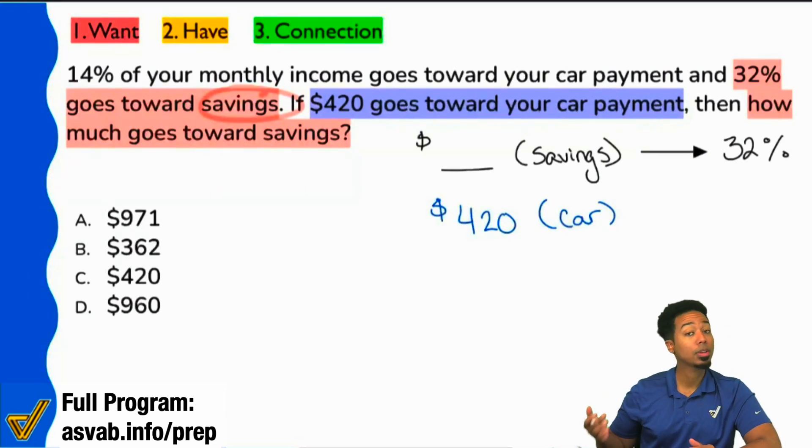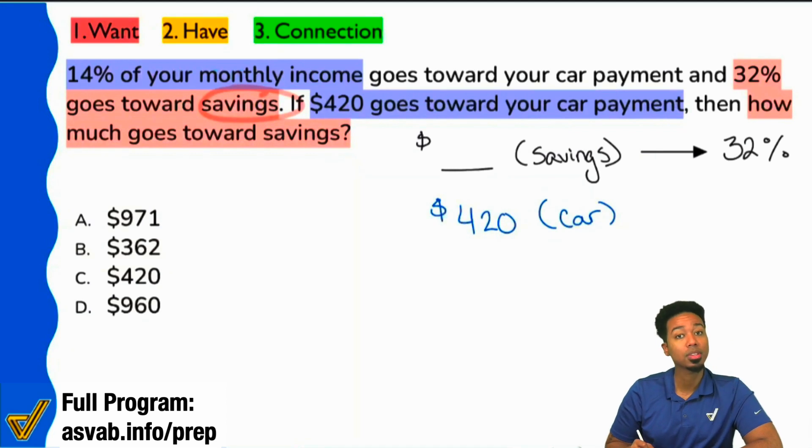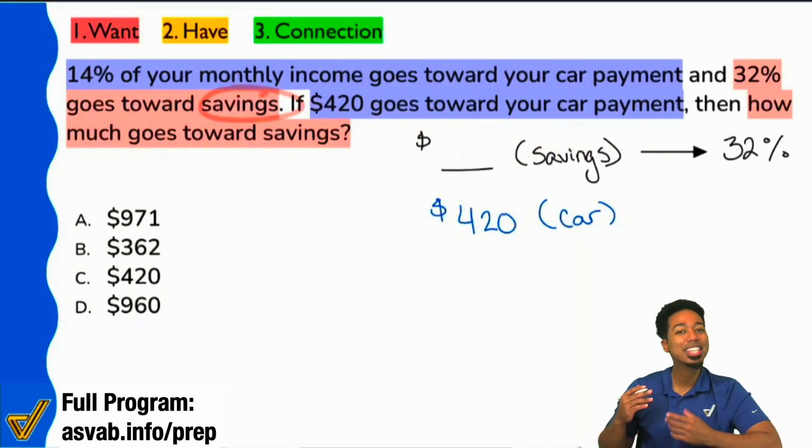And so, what about the car? Well, what percentage is that going to be? 14, right here. 14% of your monthly income goes towards your car payment. So they give it to you.